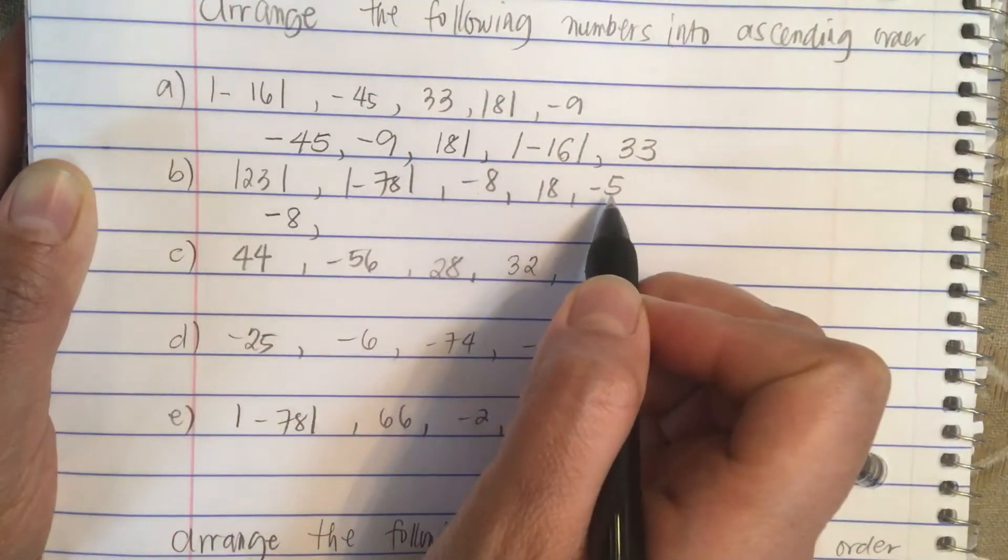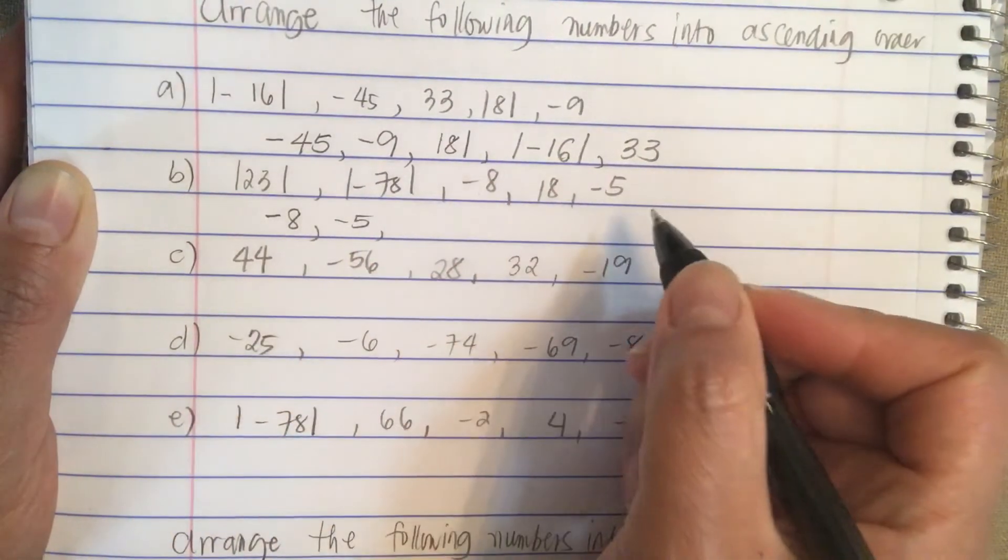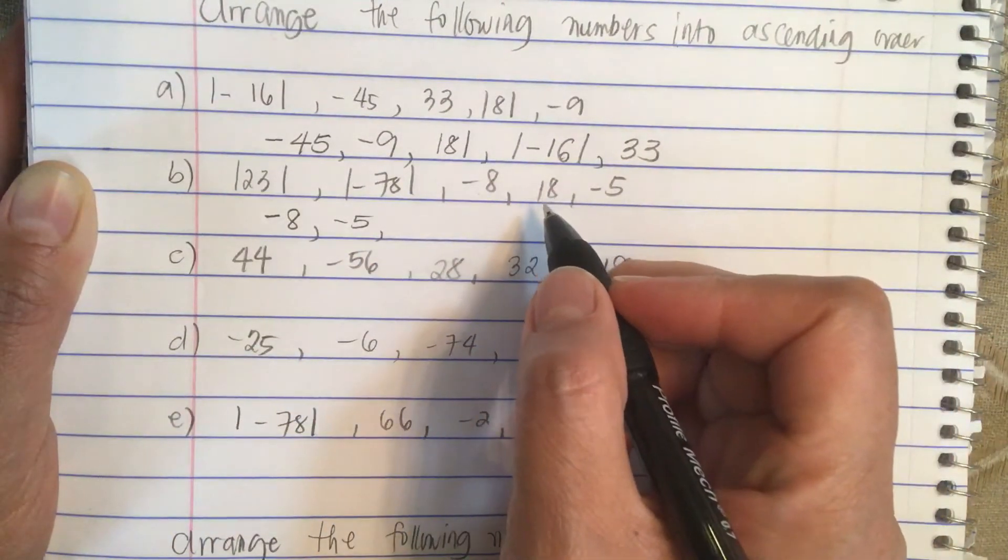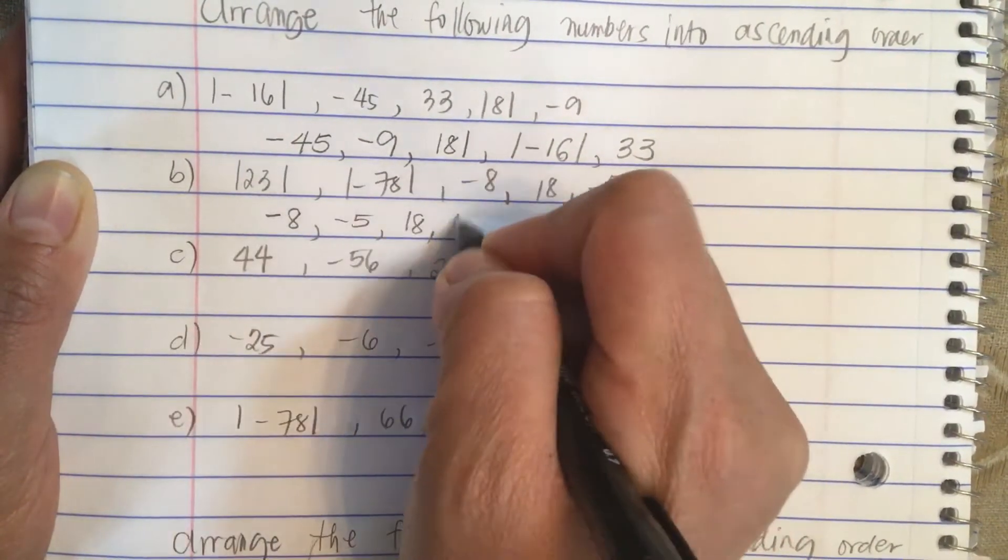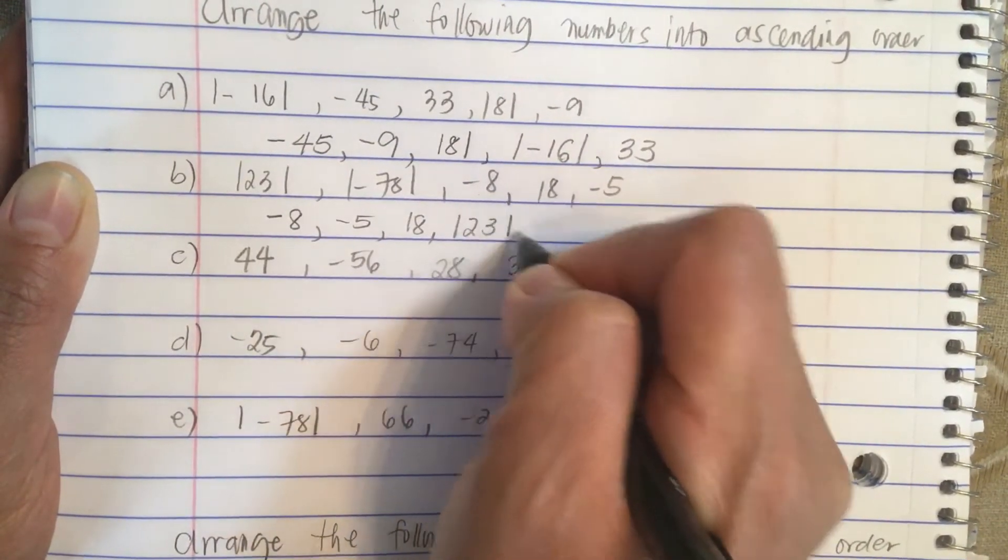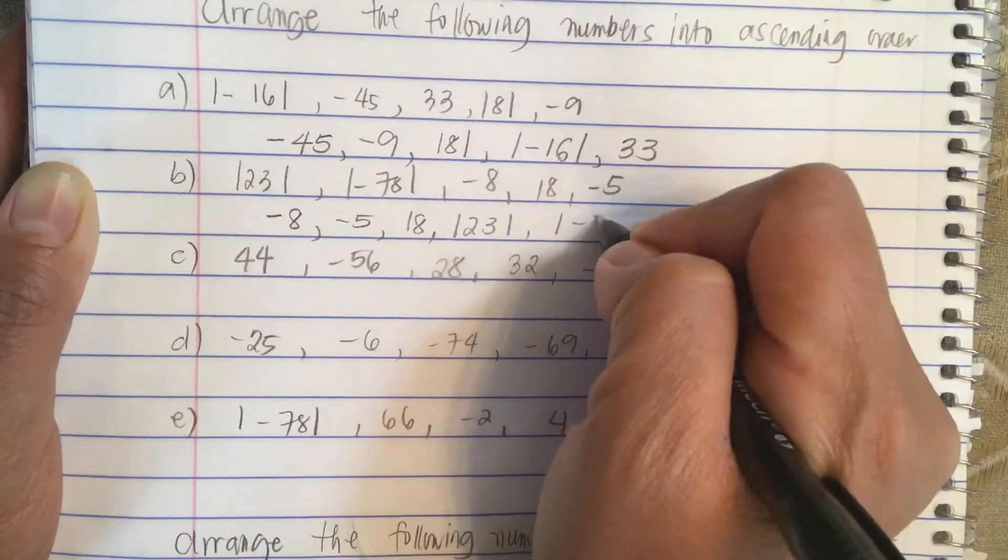And then a minus 5. And then 18. And then 23, absolute value of 23. And then absolute value of negative 78.